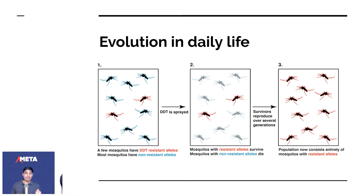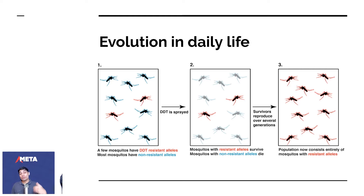You can actually see evolution in daily life. In some places in the world there are mosquitoes with DDT-resistant alleles. If you spray DDT in a room with both resistant and non-resistant mosquitoes, only the ones with resistant alleles survive and reproduce. Eventually you have a room full of mosquitoes resistant to DDT.